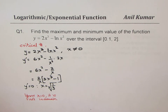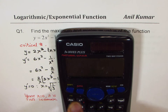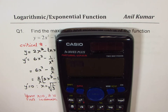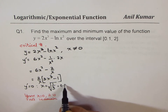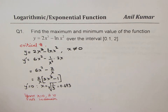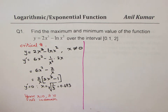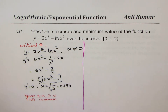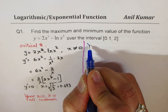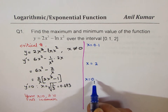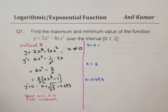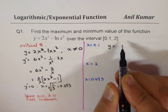We have only one critical number: the cube root of 1/3. Let's find its approximate decimal value — cube root of 1/3 ≈ 0.693. To find the extrema on the closed interval, we evaluate the function at the three key values: x = 0.1 (left endpoint), x = 2 (right endpoint), and x ≈ 0.693 (critical number).